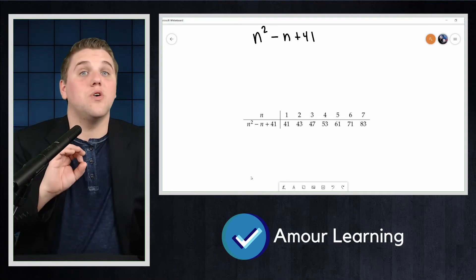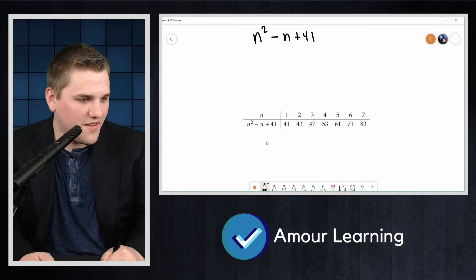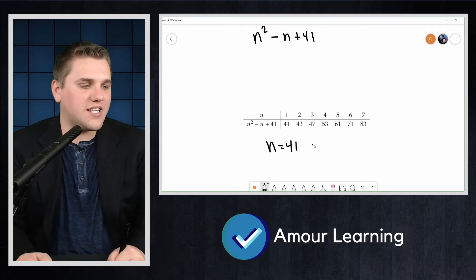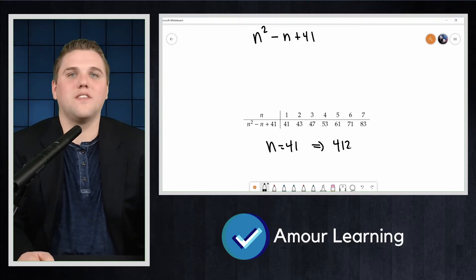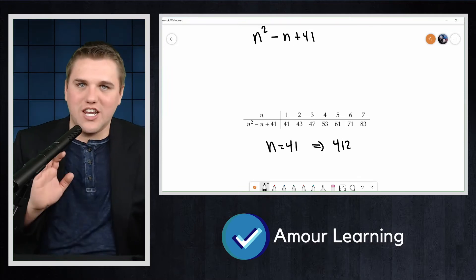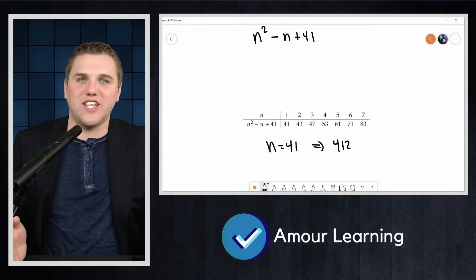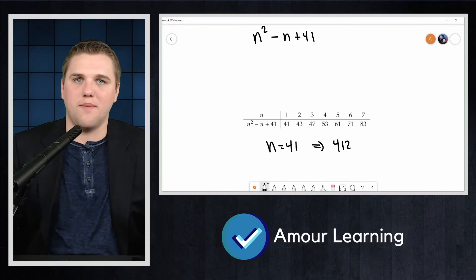In fact, we can quickly see that n equals 41 gives us 41 squared, which is certainly not prime. You might say that this is a counterexample to the conjecture that n squared minus n plus 41 is always prime.